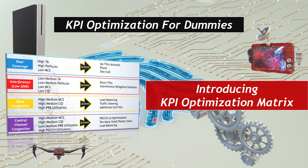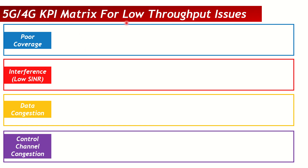One of the most common and required skill sets is to identify low throughput issues — what causes low throughput and how we can rectify it. This applies to both 5G NR and 4G LTE, whether SA or NSA. More or less, the main concept when it comes to the optimization matrix is pretty similar. We have four major causes.